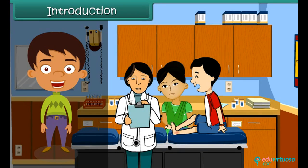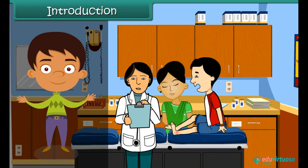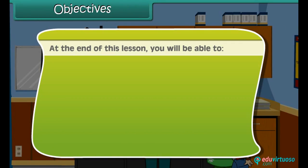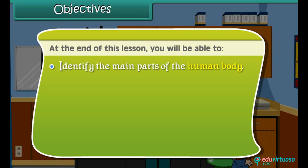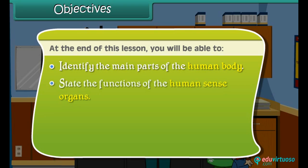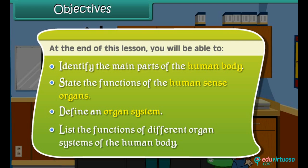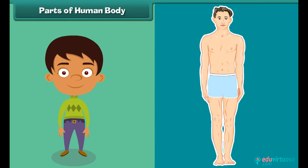She prescribes medicines and advises bed rest for four days. In this lesson, you will learn about the different organ systems of our body and their functions. At the end of this lesson, you will be able to identify the main parts of the human body, state the functions of the human sense organs, define an organ system, and list the functions of different organ systems of the human body.